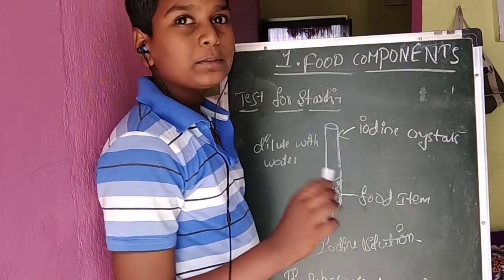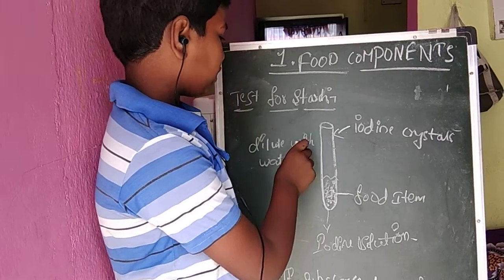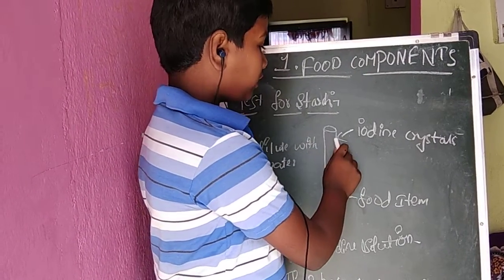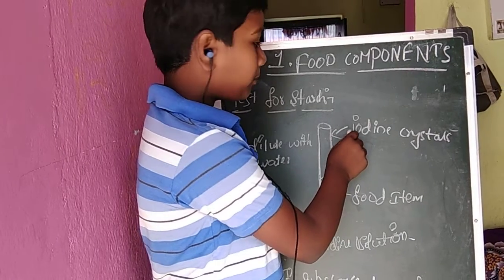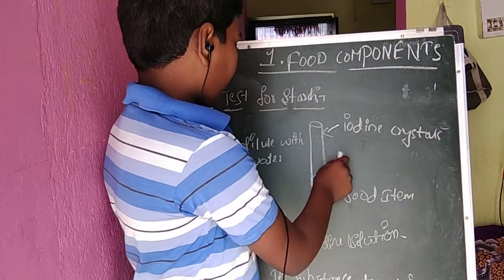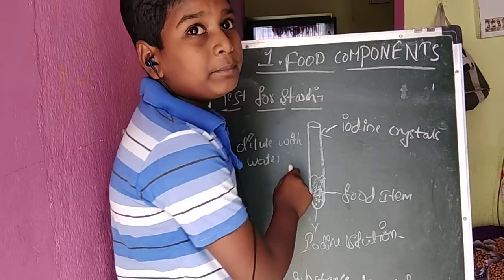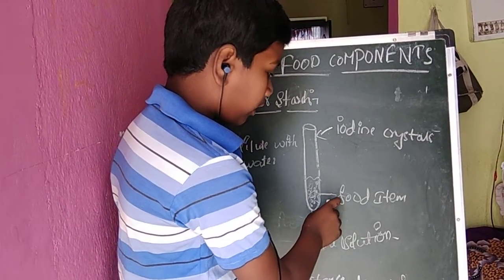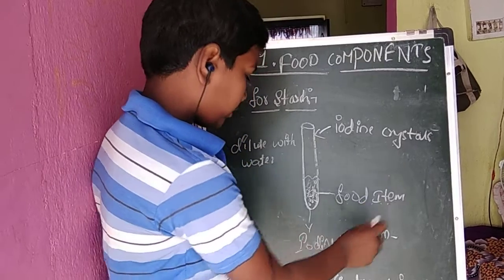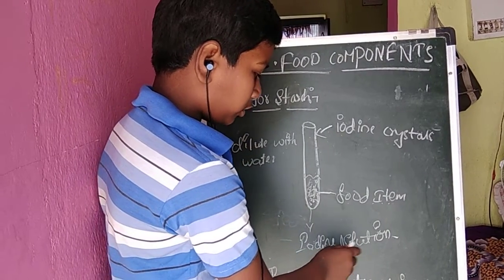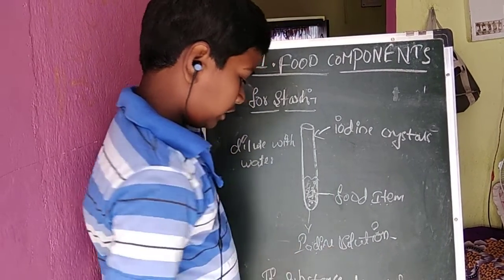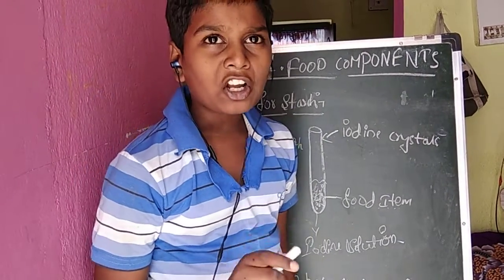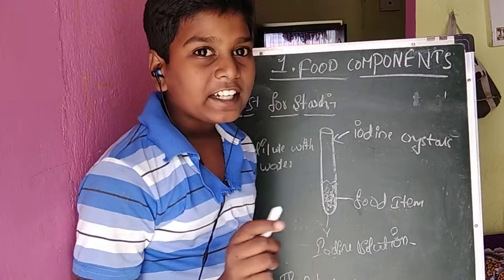Let us do one experiment — the test for starch. Take a test tube or a cup. In the test tube add some iodine crystals and dilute with water till it becomes yellow color. Then add one food item and add some iodine solution. What do we observe? If the substance turns into black or blue color, it contains starch.